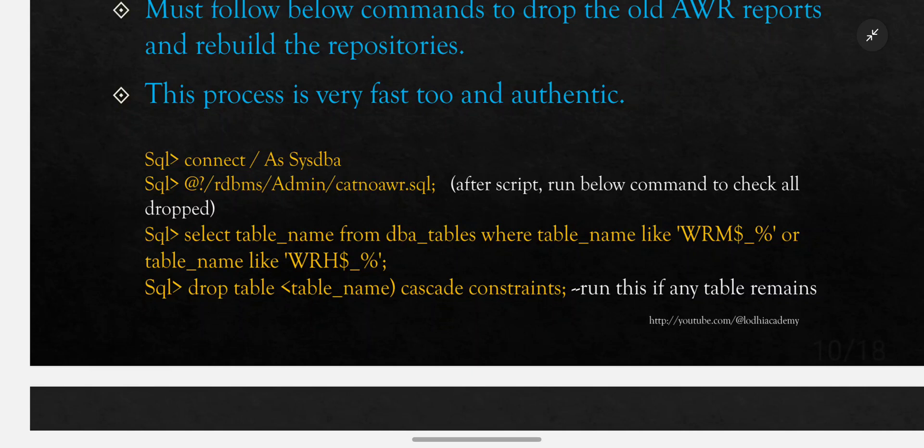Or if you are already in the admin folder, just type: @catnoawr.sql. After the script runs, execute the below command to check all dropped tables: SELECT table_name FROM dba_tables WHERE table_name LIKE 'WRM$_%' OR table_name LIKE 'WRH$_%'; This verifies that the above script has dropped all the tables.